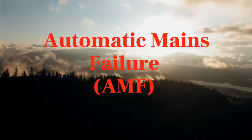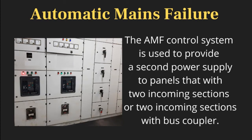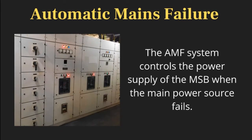Automatic Mains Failure system. The AMF control system is used to provide a second power supply to panels with two incoming sections, or two incoming sections with a bus coupler. The AMF system controls the power supply of the MSB when the main power source fails.